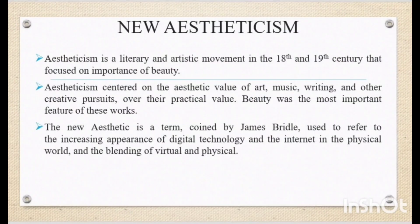New Aestheticism is a literary and artistic movement in the 18th and 19th centuries that focuses on the importance of beauty. Aestheticism centered on the aesthetic values of art, music, writing, and other creative pursuits over their practical value. Beauty was the most important feature of these works. For example, John Keats' 'A thing of beauty is a joy forever' is the finest example of aestheticism.